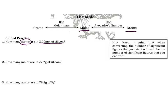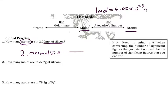The first three steps to these problems are always going to be the same. First, write what's given — we're given 2.00 moles of silicon. Then we need to convert from moles to atoms using a conversion factor. We know that one mole of anything is equal to 6.02 × 10²³ atoms of that thing, regardless of what type of atoms we're dealing with.